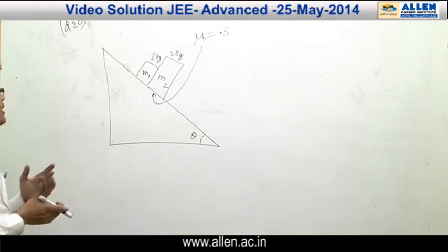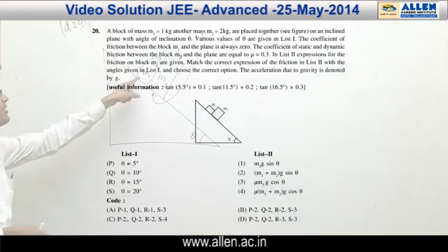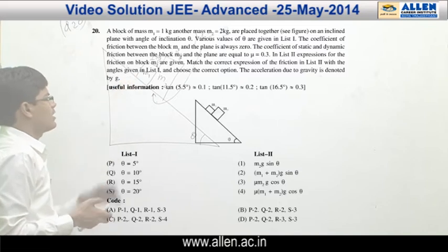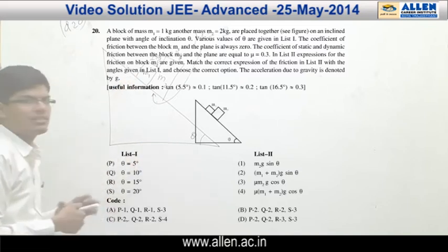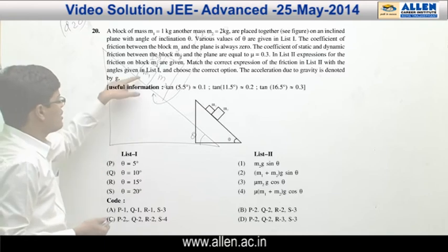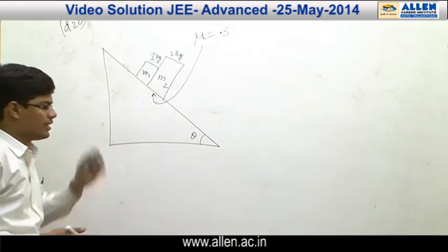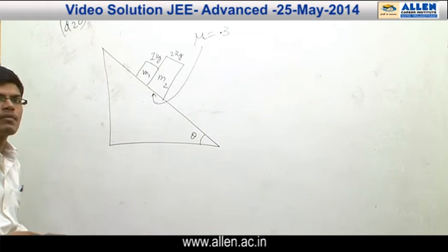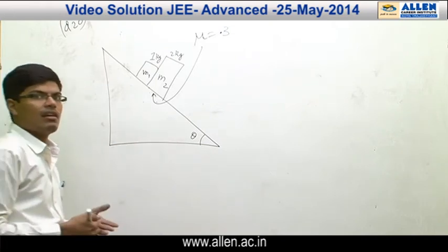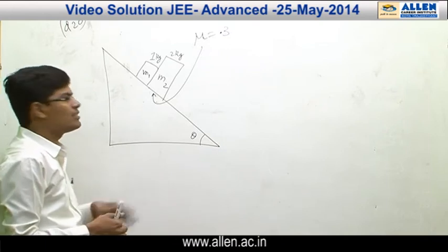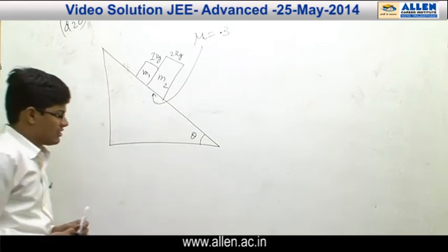Let us discuss question number 20. It says there are 2 blocks of mass M1 = 1 kg and M2 = 2 kg kept on an inclined plane at angle theta. The friction coefficient between M1 and the plane is 0 and the friction coefficient between M2 and the plane is 0.3. Depending on the value of theta, we have to find the friction acting on the system.